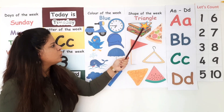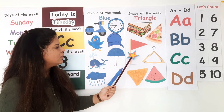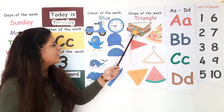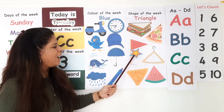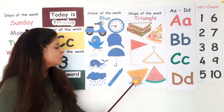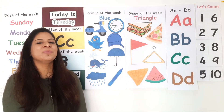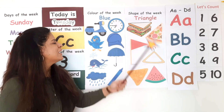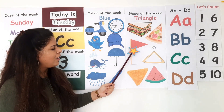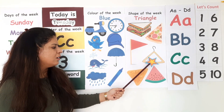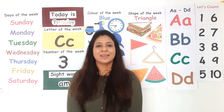Now let's see the shape of the week. Shape of the week is triangle. A triangle is a three-sided shape — it has three sides and three corners. Now let's see the pictures: triangle shape sandwich, triangle shape pizza slice, triangle shape flag, triangle shape hanger, triangle shape tortilla chips, triangle shape watermelon slice. Well done!